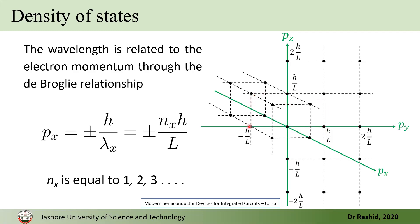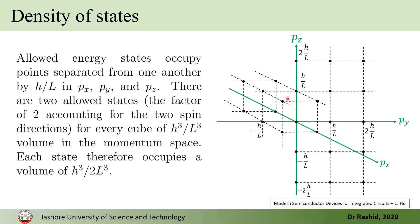So, in the cube of this length, h by L, since this is in all the direction, the increment is h by L, in this cube, say, for example, this one, h cube by L cube, there will be two states in this volume. So, the each state occupies h cube by L cube volume.